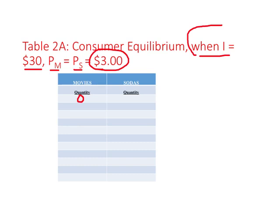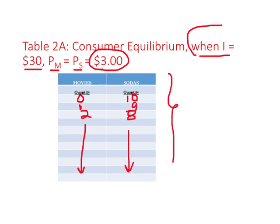If this person borrows or saves nothing, the maximum is 10 units of sodas. Living within the budget constraint, if they watch one movie, the maximum quantity of sodas is 9 units. If they watch 2 movies, the maximum is 8 units. In this way, we can complete the table. This table represents all consumption choices available to this person given their financial reality, or budget constraint.